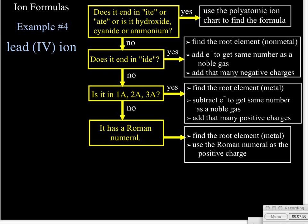Our final example is the lead Roman numeral 4 ion, or we just read that lead 4 ion. We take a look at it and we say, well, it's Pb for lead, and the Roman numeral 4 tells us it's going to be a 4 plus charge.